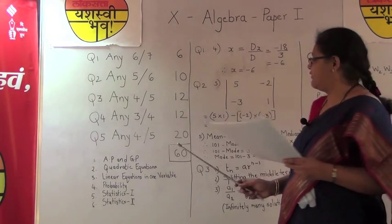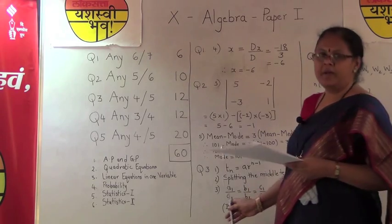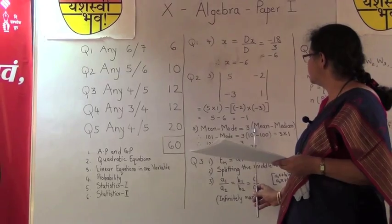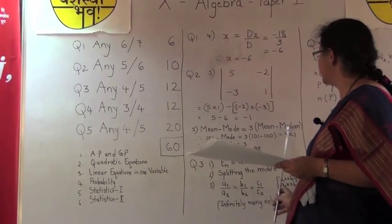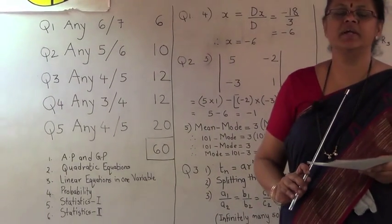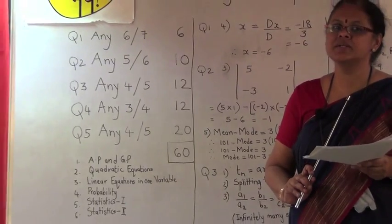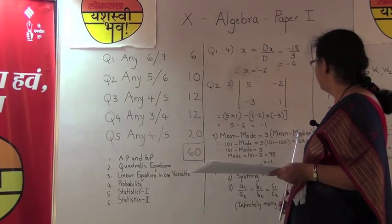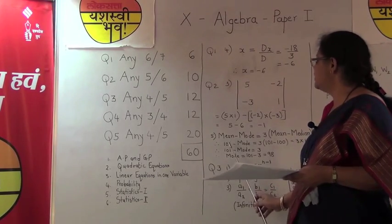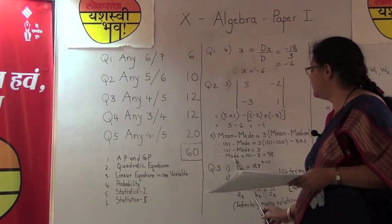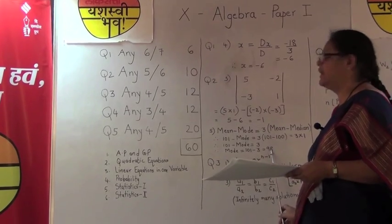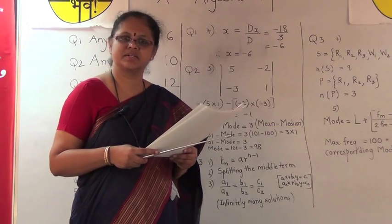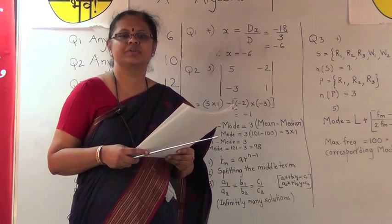Sum number 5 is based on statistics, where you have the formula: mean minus mode equals 3 times (mean minus median), which shows the interrelationship between the various forms of central tendency. The value of mean and the value of median are given; substitute the values in the formula and you get the answer for mode as 98.